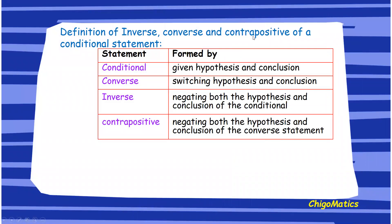Now we go on to define the inverse, converse, and contrapositive of a conditional statement. A conditional statement is easy to identify — it has a clear hypothesis and conclusion. For the converse, you simply switch the hypothesis and conclusion. For the inverse, you negate the hypothesis and the conclusion. For the contrapositive, you negate both the hypothesis and the conclusion of the converse statement.